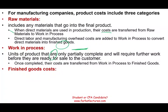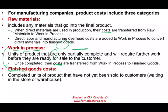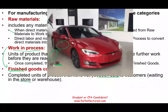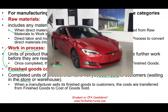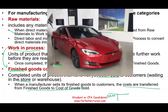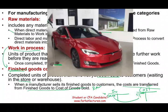Once the vehicle is completed, all the costs incurred on that unit in work in process are transferred to finished goods. Finished goods are 100% completed units that have not yet been sold — they're waiting in the store or warehouse. When a manufacturer sells its finished goods, the costs are transferred to cost of goods sold. That $50,000 we discussed earlier consists of raw material (direct material), direct labor, and manufacturing overhead — all transferred from work in process into finished goods inventory.